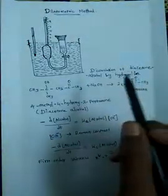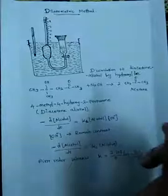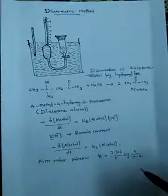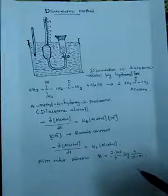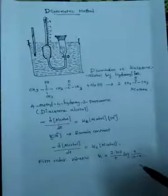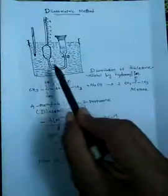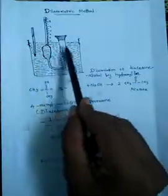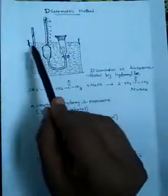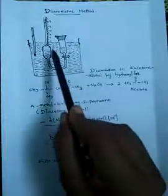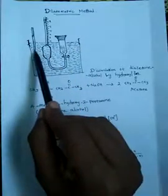We have a third method called the dilatometric method. Chemical reaction kinetics is also studied using a dilatometer. This is the block diagram of the dilatometer — the dilatometer is kept in a constant temperature bath, and here is a thermometer.